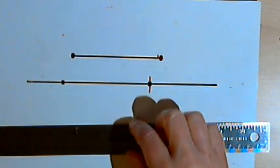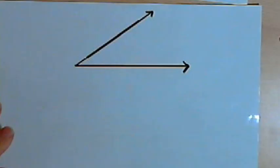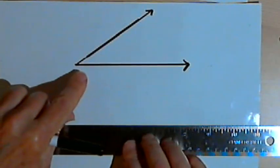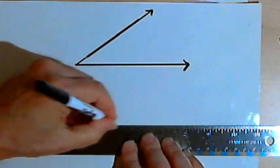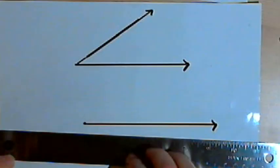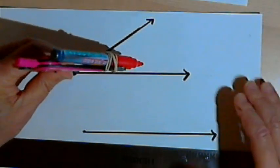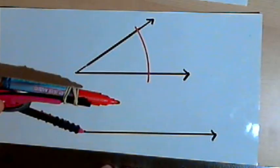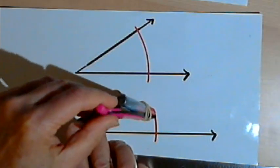Let's go on to copying an angle. I've got an angle drawn here and I want to make a copy of it. The first step is to draw a ray, which is going to be one of the sides of the angle. Now I'm going to take the compass and draw an arc which goes through both sides of my original angle, and I'm going to copy that arc onto the ray. I'll place the point of the compass at the end point of that ray and draw another arc.